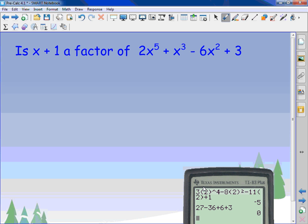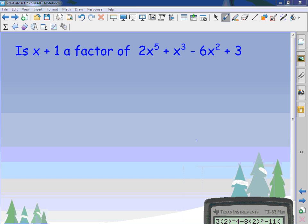I want you to see, is x plus one a factor of 2x to the fifth plus x cubed minus 6x squared plus three. To find out if it's a factor, it's going to be f of what? Negative one. So I have two times negative one to the fifth plus negative one cubed minus six times negative one squared plus three. We don't need the filler in because we're just substituting in it. Negative one to the fifth is negative one, so it's negative two minus one. Negative one squared is one, so it's negative six plus three. Negative two, negative three, negative nine, negative six. Is it a factor? No.